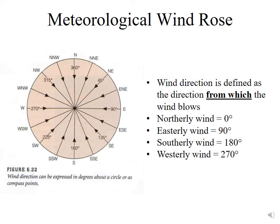An east wind — a wind coming from the east — is designated as 90 degrees, a wind from the south is 180 degrees, and a wind from the west is 270 degrees.